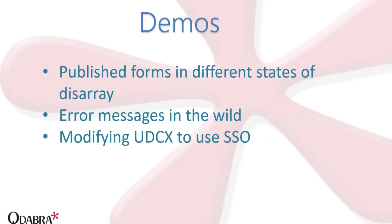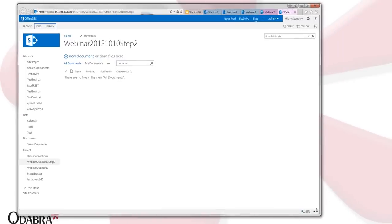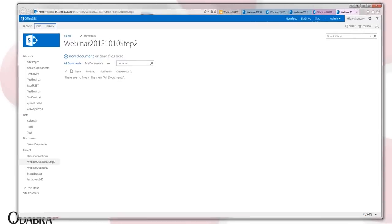Here we are at the demos. I've got some published forms to show you — they're in different states of disarray. We're going to look at an error message or two, and we're going to modify the UDCX to use an SSO. I'm going to drag my browser window over here and cover up what I'm currently sharing.